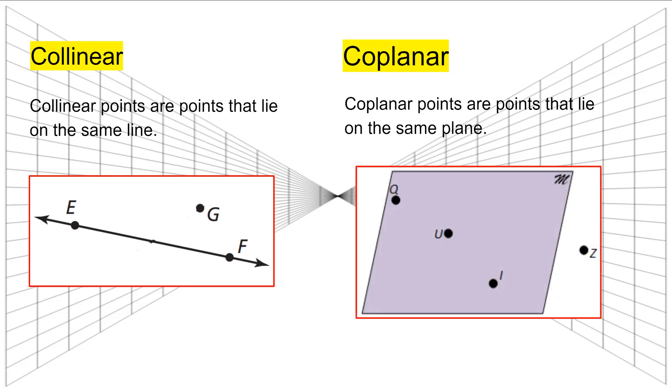Coplanar points are points that lie on the same plane. Which points are coplanar in this example? Q, U, and I. Z is not a point on plane M, and therefore, it is not coplanar to Q, U, and I.